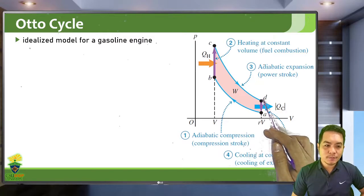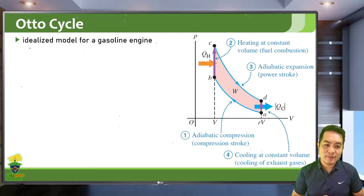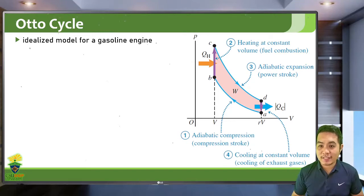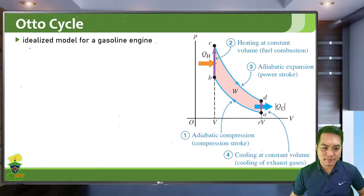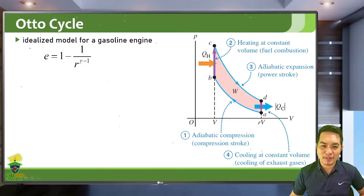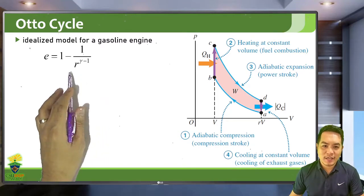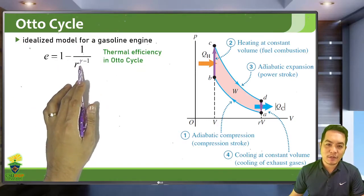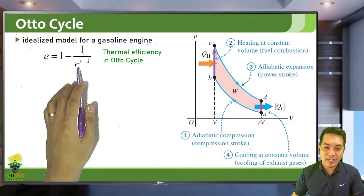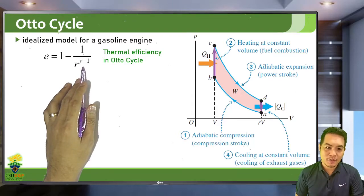After the power stroke, from D to A heat is released to the exhaust and the gas cools and compresses again. That completes the Otto cycle. For the Otto (gasoline) engine the efficiency is calculated as: e = 1 − 1/r^(γ−1), where r is the compression ratio and γ is the heat capacity ratio of the gas.